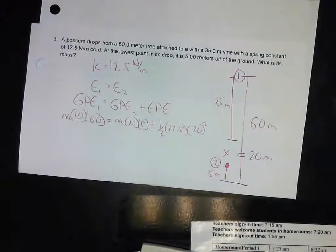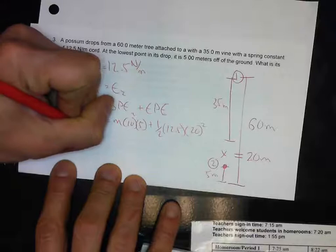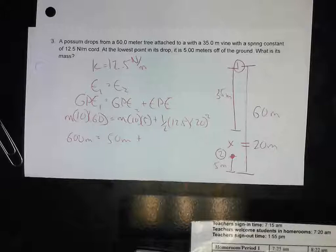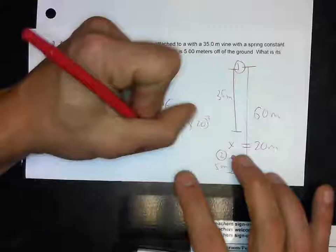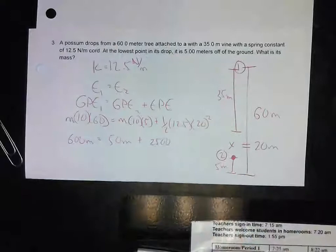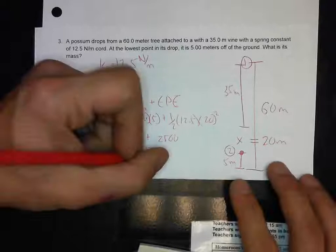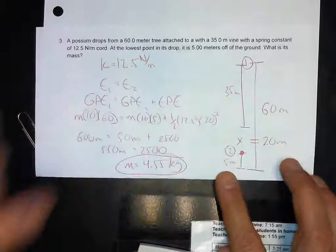So MGH₁ equals MGH₂ plus ½kx². Gravity is 10, height at position 1 is 60, height at position 2 is 5, k is 12.5, and x is 20. That gives 600M equals 50M plus 0.5 times 12.5 times 400, which is 2,500. So 550M equals 2,500, giving a mass of 4.55 kilograms.